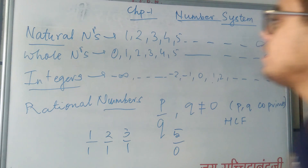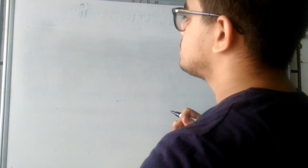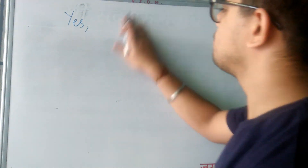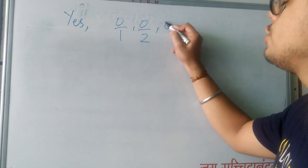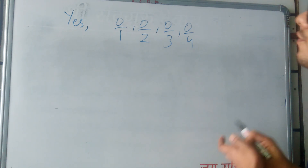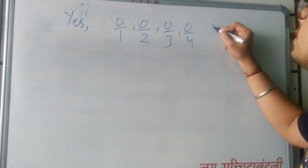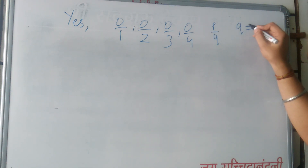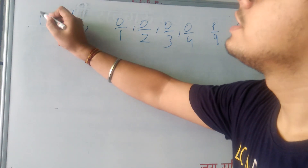Now let us start solving the first exercise of the NCERT book. The first question is: Is 0 a rational number? Yes, the answer is yes — 0 is a rational number as it can be represented in the form of 0 upon 1, 0 upon 2, 0 upon 3, 0 upon 4. Each of them has a value 0. So 0 is being represented in the form of P upon Q where Q does not equal to 0, satisfying the definition of a rational number. Thus 0 is a rational number.